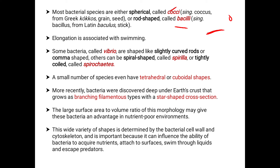Some bacteria called vibrio are shaped like slightly curved rods, also described as comma-shaped. Others can be spiral-shaped, called spirilla, or tightly coiled, called spirochetes. So the shapes are: spherical (cocci), rod (bacilli), comma/slightly curved (vibrio), spiral (spirilla), and tightly coiled (spirochetes).